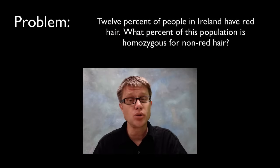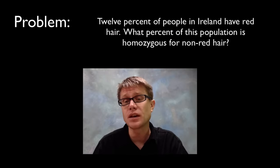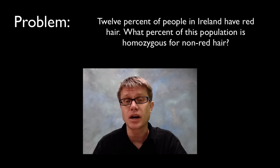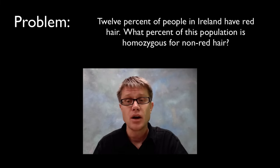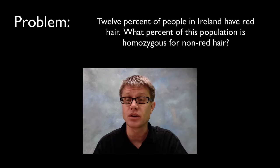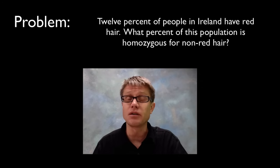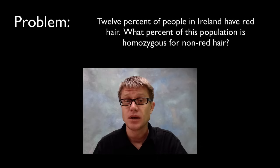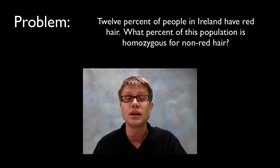Now let me give you a problem to try. Let's say 12% of individuals in Ireland have red hair. What percent of this population is homozygous for non-red hair? Figure out what the question is asking, figure out what they're giving you, and then use the Hardy-Weinberg equation to give it a try.